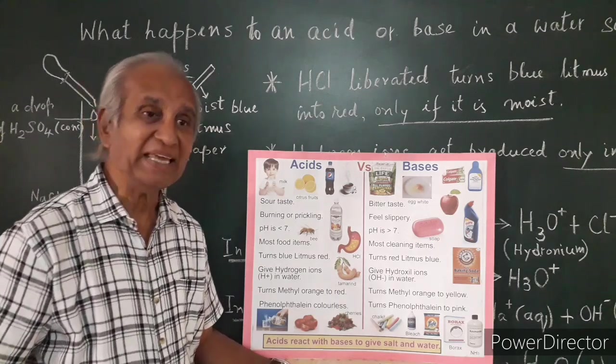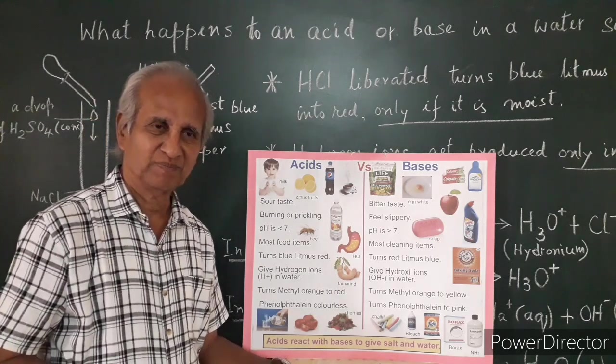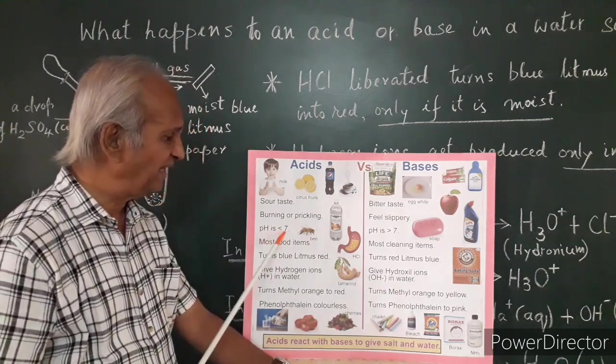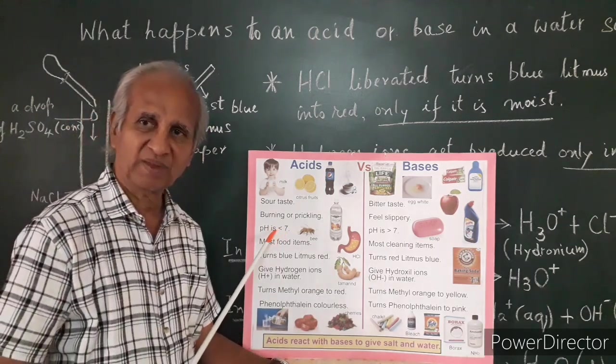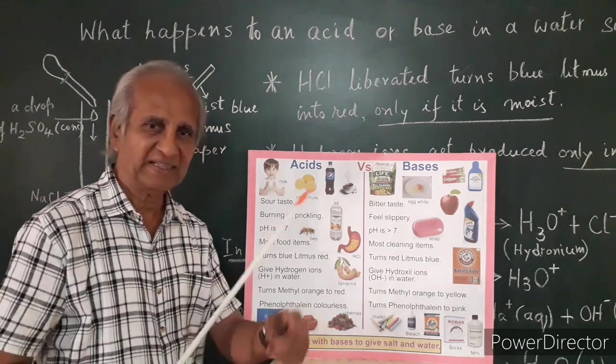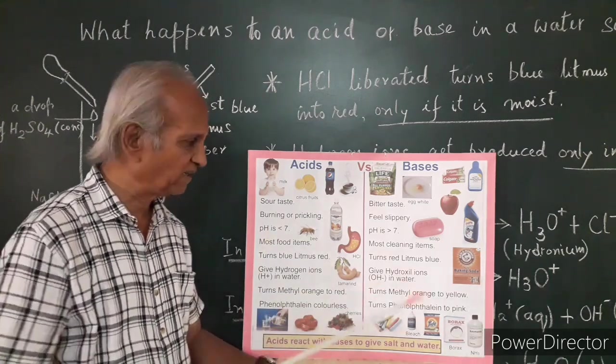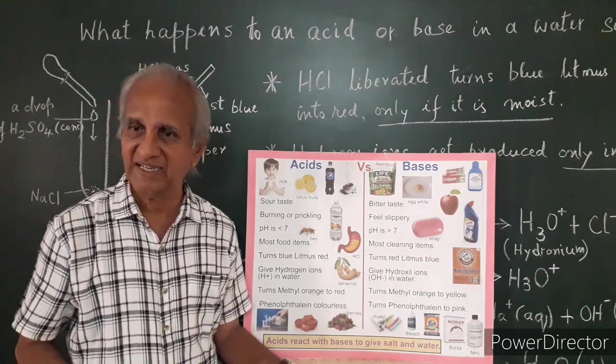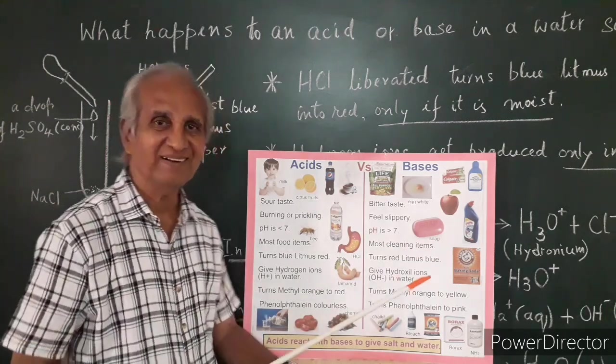When it comes to the pH, hydrogen potential, it is less than 7 for acids. We will be discussing after this chart, but in the cases of bases it is always more than 7.